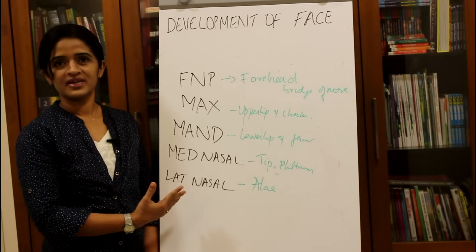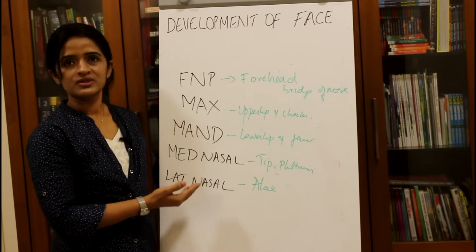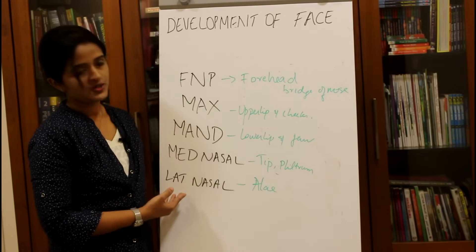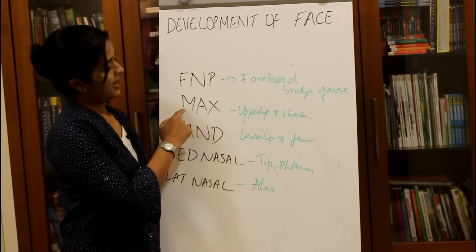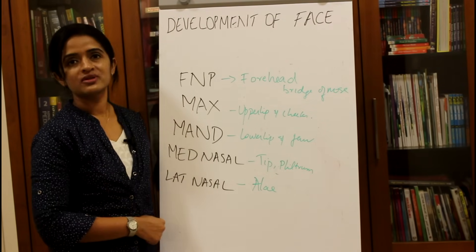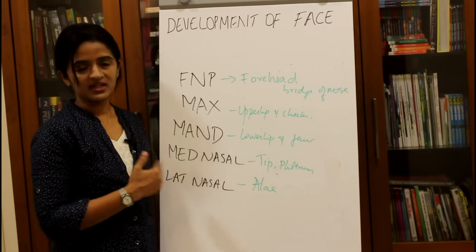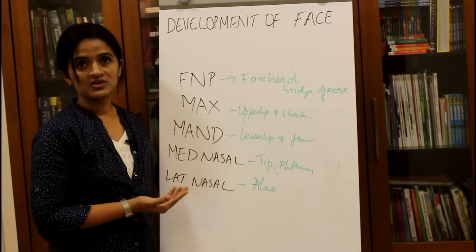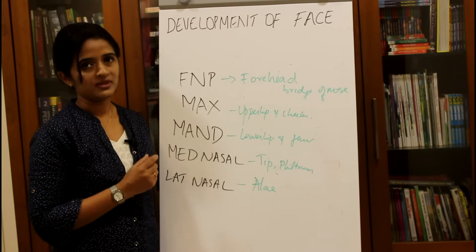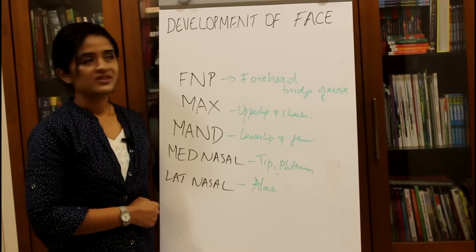To conclude the derivatives of these processes: the frontonasal process gives rise to the forehead and bridge of nose. Its medial nasal process gives the tip of nose and philtrum of upper lip; the lateral nasal process gives the ala of nose. The maxillary process gives rise to the upper lip and cheek. The mandibular process gives rise to the lower lip and jaw. The nasolacrimal groove becomes the nasolacrimal duct connecting the conjunctival sac to the inferior meatus, with its cranial end forming the lacrimal sac.